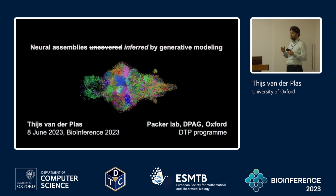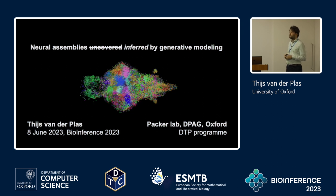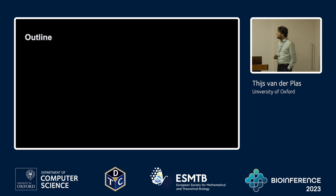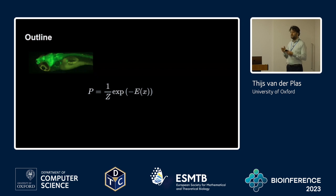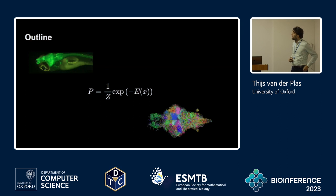I'm going to talk about neuroscience, and in particular my talk is about showing how our brain, which is a very high dimensional system, can in fact be explained by a much lower dimensional set of latent variables. First I will explain how we can image the activity of entire brains in zebrafish. Then I will explain how we use generative modeling to infer a low dimensional representation. And thirdly we will look at some results explaining how the brain is organized.